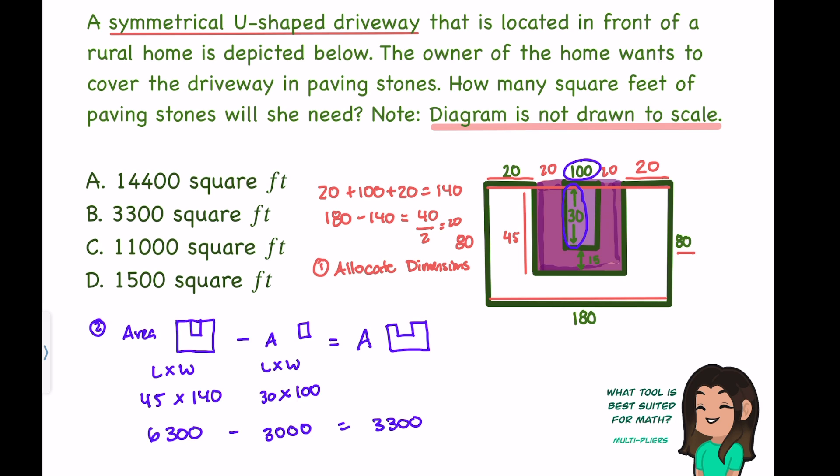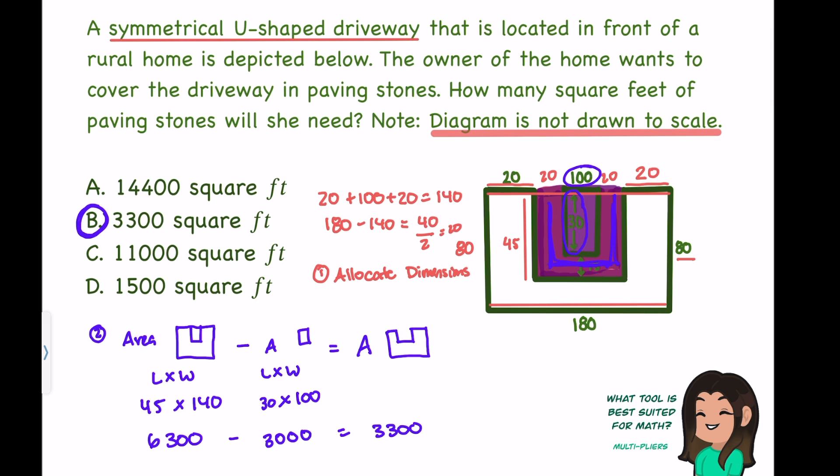6,300 minus 3,000 leaves us with 3,300. Meaning our area of the U shape, this portion that we wanted here, is 3,300, answer choice B. Area of the middle rectangle minus the area of the very inner rectangle will give us the area of that U shape.